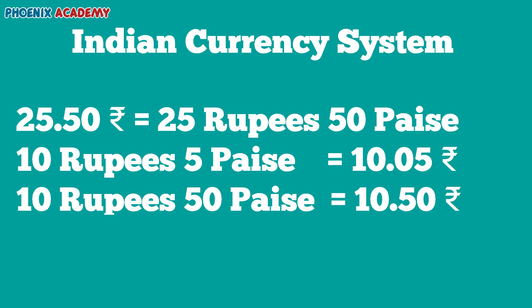In class 2, we have learned the addition and subtraction of money. To add rupees and paisae, arrange them in column form and add as whole numbers. To subtract rupees and paisae, arrange them in column form and subtract as whole numbers.